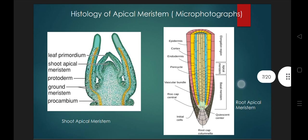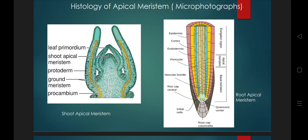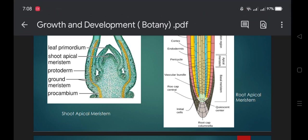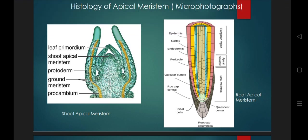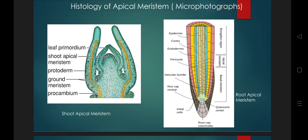You can see the histology of the apical meristem. This is the root of the apical meristem — look at the yellowish portion, which is called Procambium. After that you have ground tissues. You have the layer called the protoderm. This is the shoot apical meristem, and this is the leaf primordia — leaf primordia arises from here.